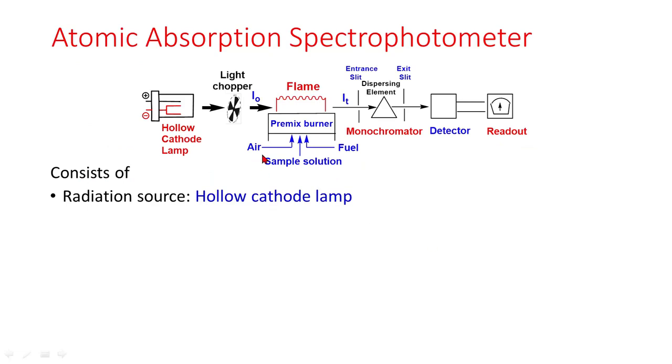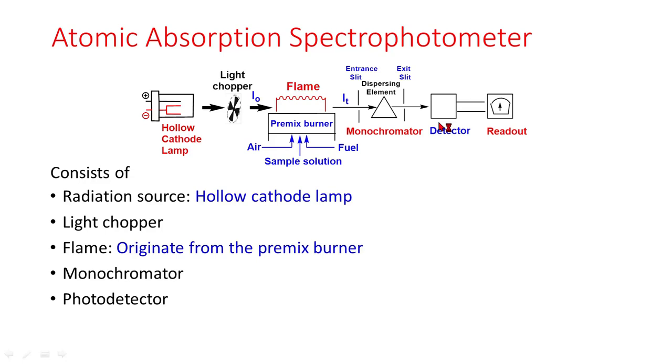This is the diagram of atomic absorption spectrophotometer. It consists of radiation source which is a hollow cathode lamp, light chopper, flame that originates from the premix burner, monochromator, photodetector, and readout device.